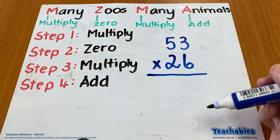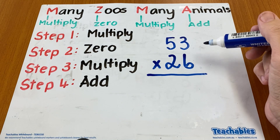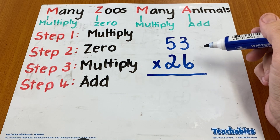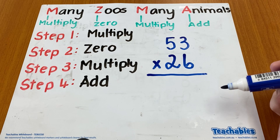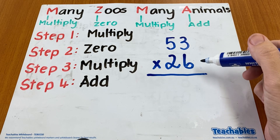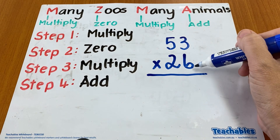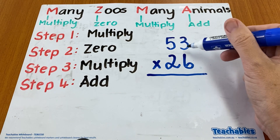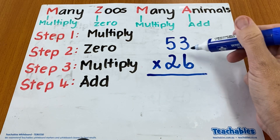So let's have a look at how we use the strategy. In here you can see I've got 53 multiplied by 26. So I'm first going to take on step one which is to multiply, and we're multiplying with the ones place value here, which is the six.